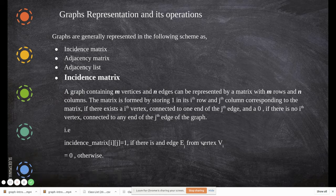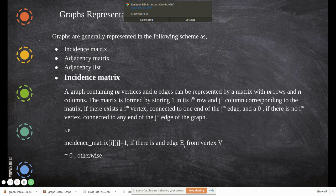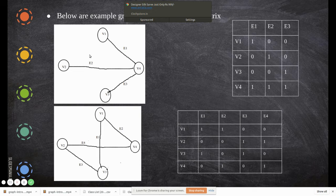In an incidence matrix, you draw a matrix between the vertices and the edges of the graph. A graph containing m vertices and n edges is represented by a matrix with m rows, where vertices are in rows and edges in columns. You store a 1 at the i-th row and j-th column if that vertex is incident to that edge, otherwise zero.